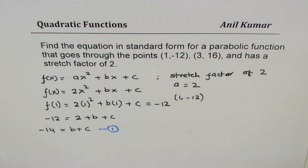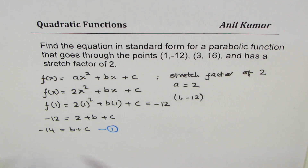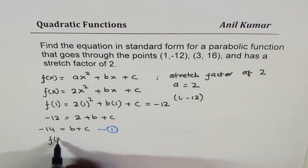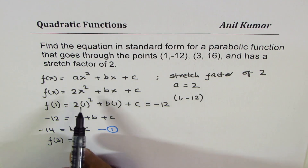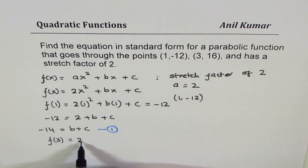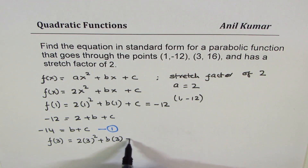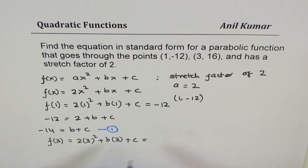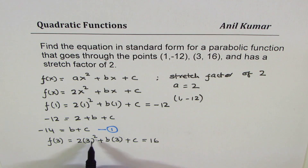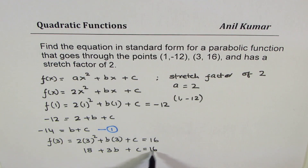For the second equation, we use the second point (3, 16). If I substitute 3 for x in my original equation 2x² + bx + c, I will get 2 times 3 squared plus b times 3 plus c, and that should equal 16. That gives us 3 squared is 9, so 9 times 2 is 18.